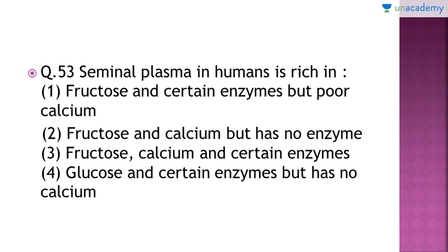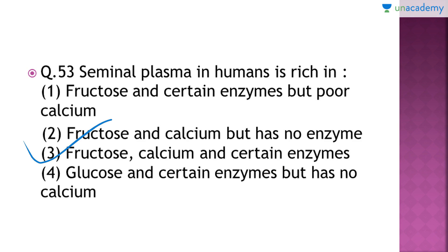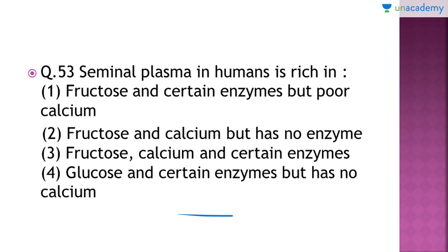Question number 53: Seminal plasma in humans is rich in which of the following? The right answer is option number three — seminal plasma is rich in fructose, calcium, and certain enzymes. Fructose gives sperms proper nutrition to remain alive, and calcium helps them remain inactive.